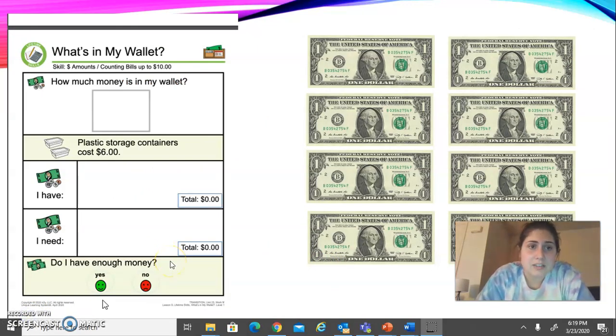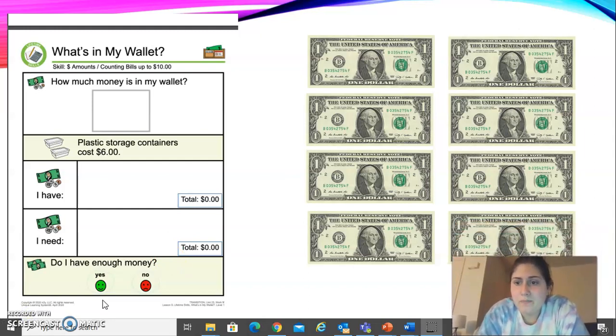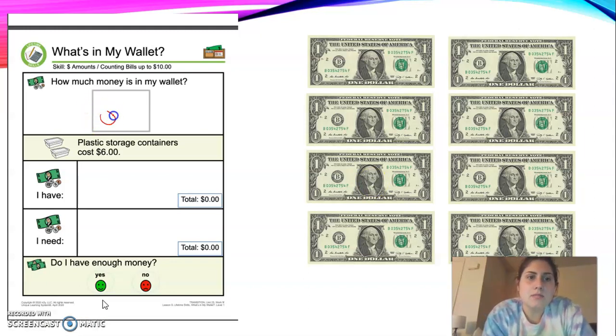Our next page asks us how much money is in our wallet. I'm going to move myself down a little. Count the money on the screen. How much do you have? Pause me if you need to. You're going to write that amount in the box. Plastic storage containers cost six dollars. Well, how much money do you have?